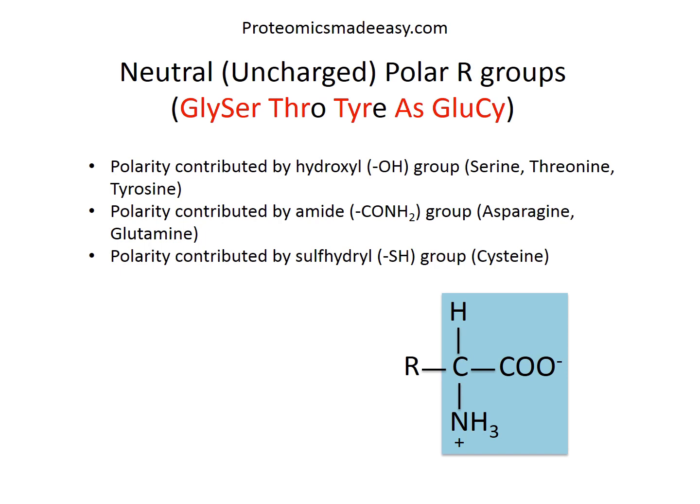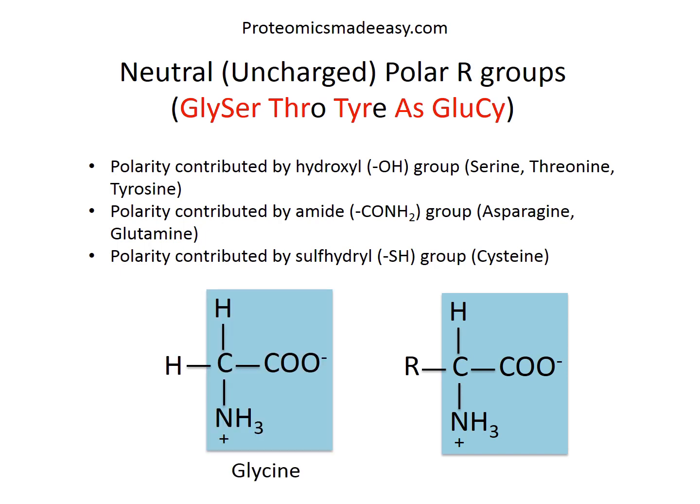For this class, I have come up with the phrase 'Glycer, Throat, Tire, As Glu C' — representing Glycine, Serine, Threonine, Tyrosine, Asparagine, Glutamine, and Cysteine. In this category, Glycine is the borderline member. Its R group is a single hydrogen atom, which is too small to influence the high degree of polarity of the alpha amino and alpha carboxyl groups, so Glycine comes as a borderline member for this category.